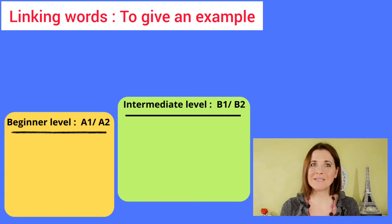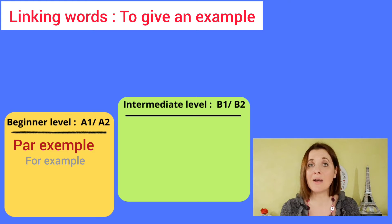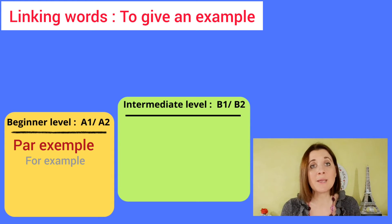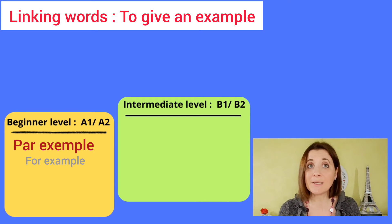Next chapter: give an example. Beginner level: par exemple. Watch your spelling if you have to write it down — exemple is written with an E in French, while in English it's written with an A.